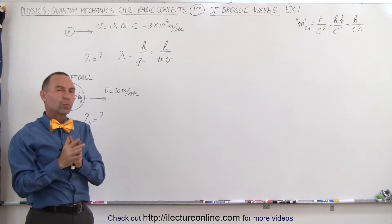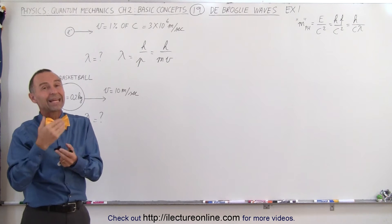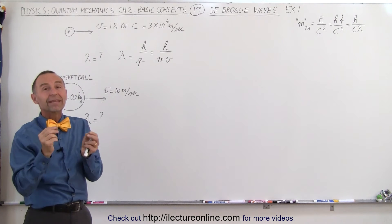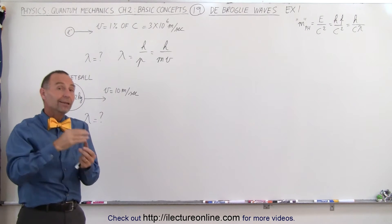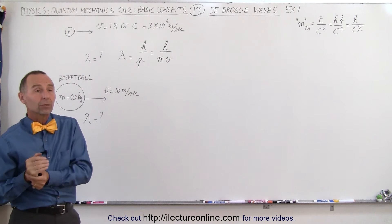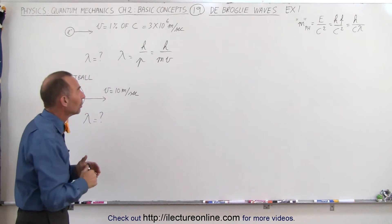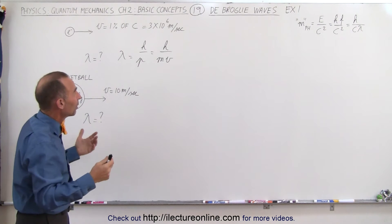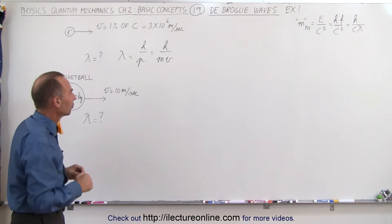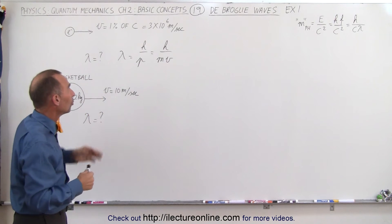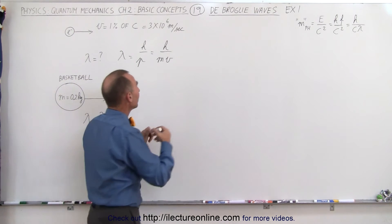Relativistic effects really don't come into play until the velocity reaches about 10% the speed of light, and even then the difference between taking it into account and not is about 1% in the final value. So at 1% the speed of light it's almost negligible — let's go ahead and figure this out.